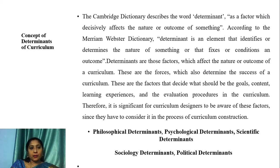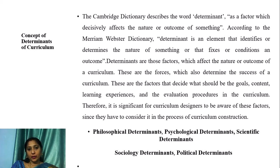Let us look into the concept of determinants of curriculum. The Cambridge Dictionary describes the word 'determinant' as a factor which decisively affects the nature or outcome of something. According to the Merriam-Webster Dictionary, a determinant is an element that identifies and determines the nature of something or that fixes or conditions an outcome. Determinants are those factors which affect the nature or outcome of curriculum — forces which determine the success of a curriculum and decide what should be the goals, content, learning experiences, and evaluation procedures in the curriculum.